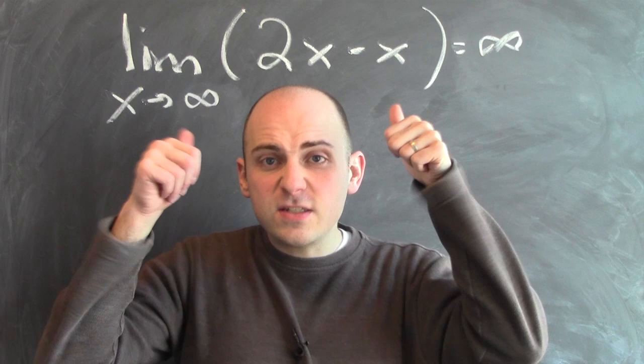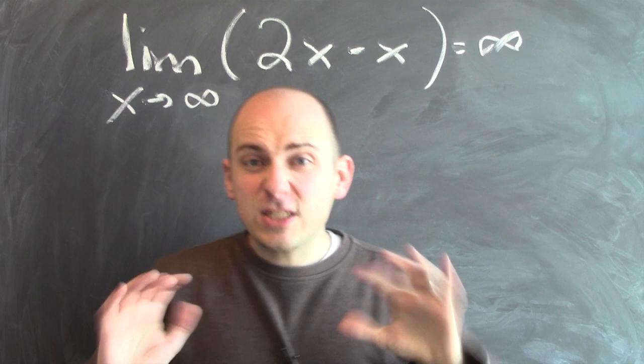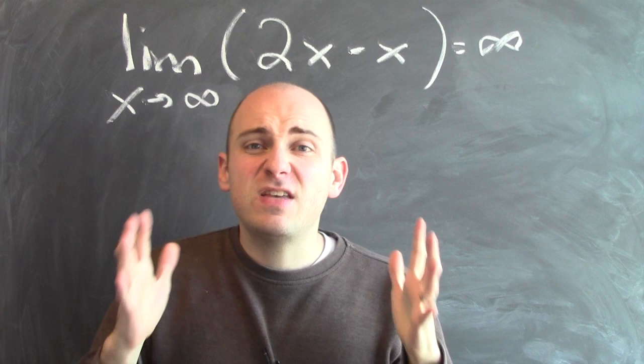Let's consider this limit: the limit of 2x minus x as x goes to infinity equals infinity. That's a true statement, but there are two totally different ways to think about this statement. And it really hinges on the distinction between potential and actual infinity.